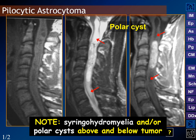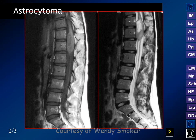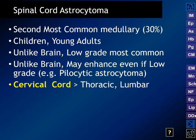Polar cysts and enhancement occur in both ependymomas and pilocytic astrocytomas. Axial images show patchy but relatively uniform enhancement across the tumor cross-section. Spinal cord astrocytomas are the second most common intramedullary tumor, occurring in children and young adults. Lower grade tumors are more common, usually presenting in the cervical cord, but may be seen in thoracic and lumbar regions as well.